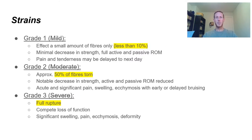Strains are graded on a scale of 1 to 3 for simplicity. Grade 1 is less than approximately 10% of fibers torn. Grade 2 is approximately 50%. Grade 3 is a full rupture. You can look through the findings — it's a summary of how these present in clinic and the information we use to determine that grade.